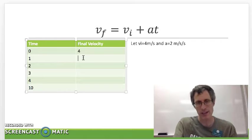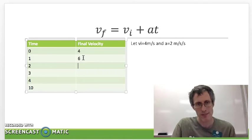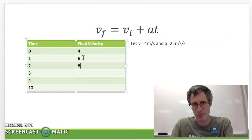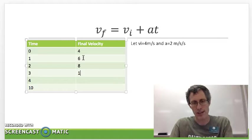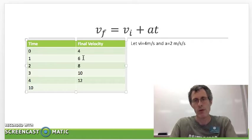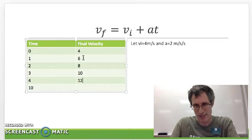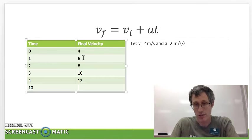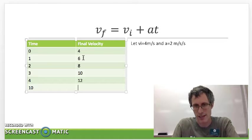So after 1 second it's going at 6 meters per second. After 2 seconds you add 2 more it's going 8. 3 seconds we're up to 10. 4 seconds we're up to 12 meters per second. Now I want you to use your great powers of reasoning and figure out how fast this car should be going after 10 seconds. Pause the video if you like.